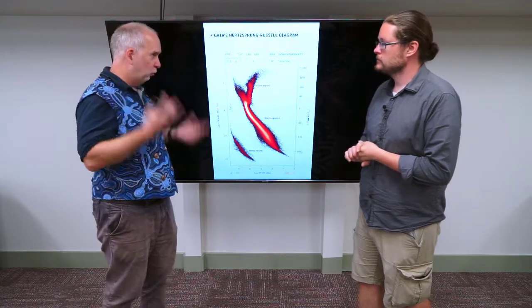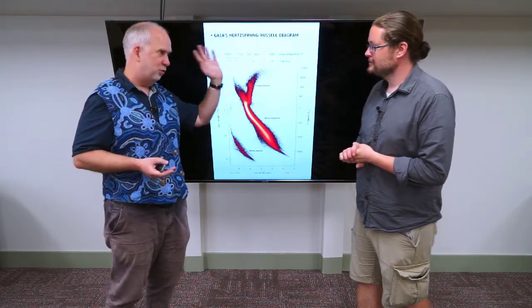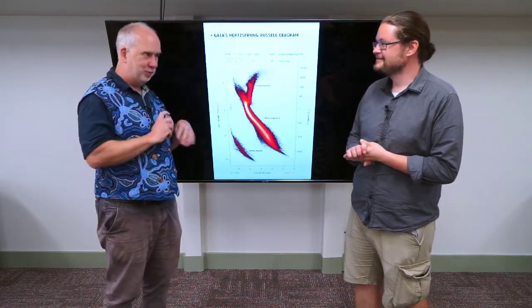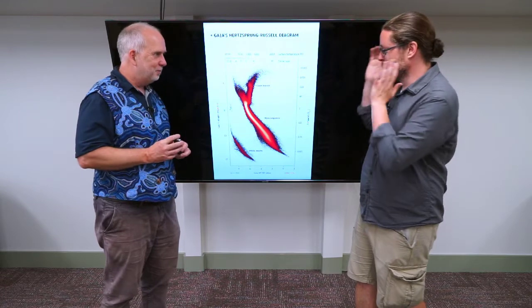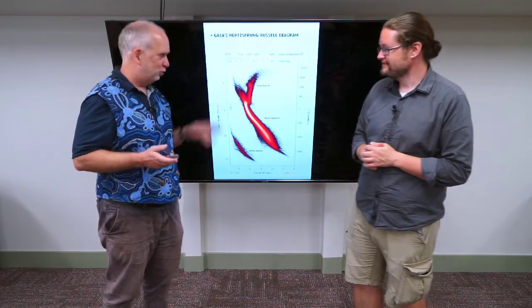So our main tool for sorting this all out is what's called the Hertzsprung-Russell diagram, named after the two people who first plotted it. And you'll hear a lot about HR diagrams if you do any astronomy. This is bread and butter in terms of looking at stars. So HR diagram, as we call it for short.